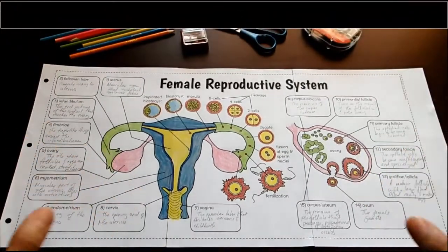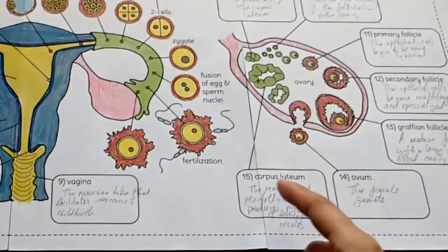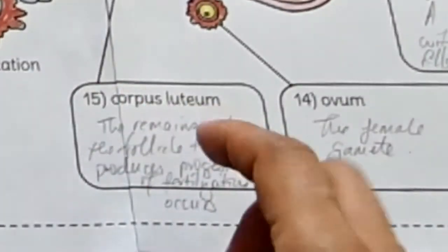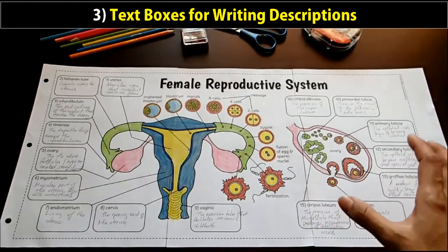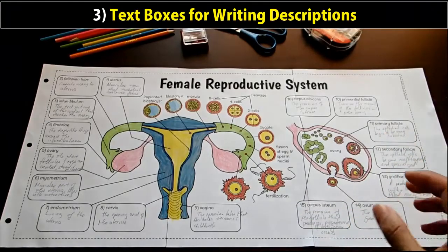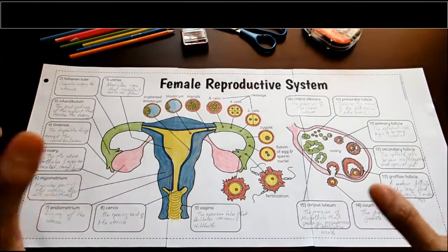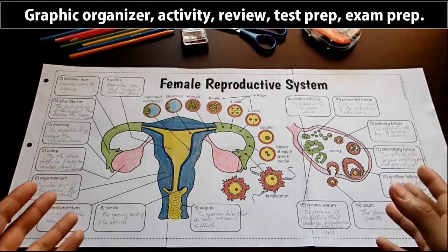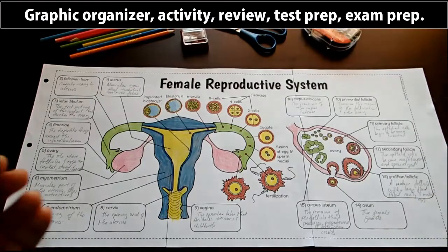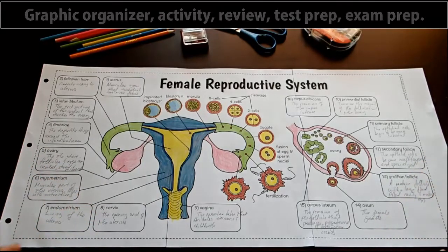The third really great feature of the foldable is that I've created text boxes that are labeled. You can choose labeled options, underlined options, or empty text boxes — I've given you different options. The text boxes provide a place for students to put in the descriptions of the different structures. This creates a really organized, nice graphic organizer that they can use as an activity, a review, test prep, and video exams — anything like that.